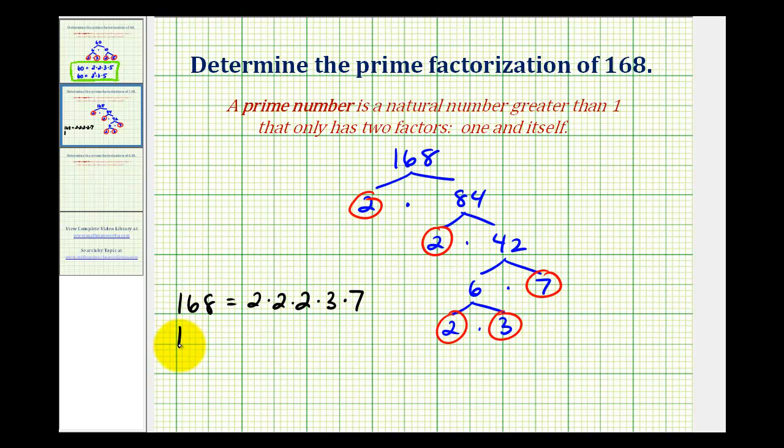And using exponents, we could write two times two times two as two to the third, or two cubed. So using exponents, we could write this as two to the third times three times seven.